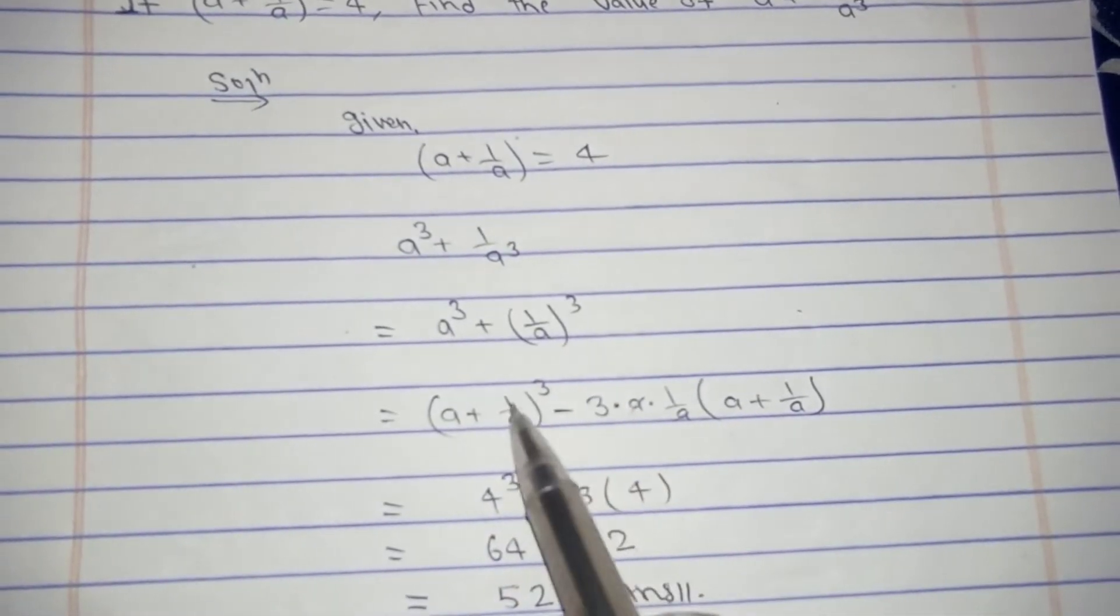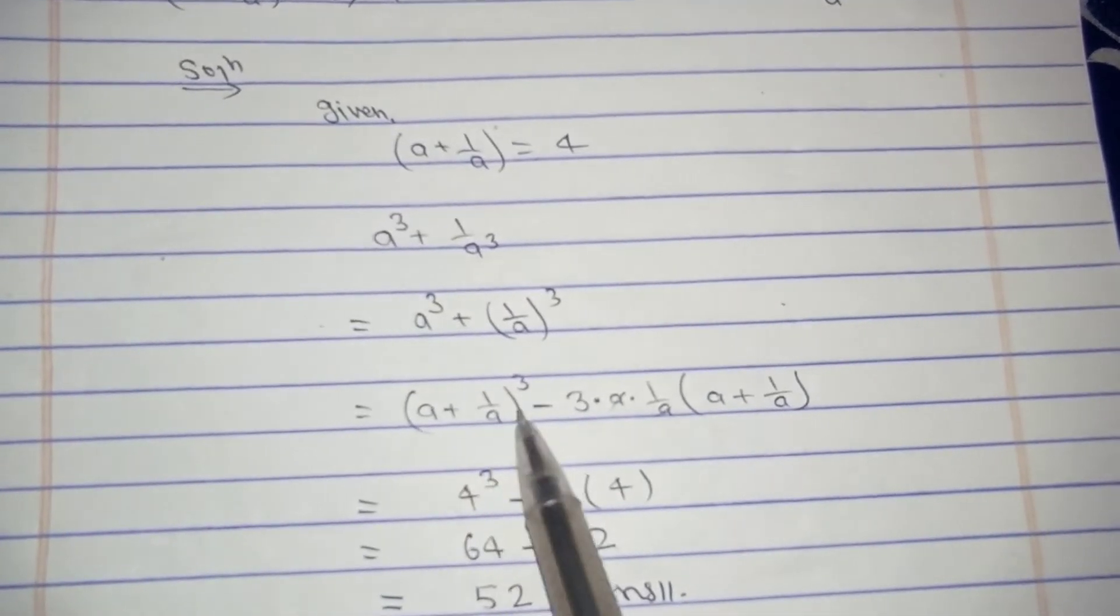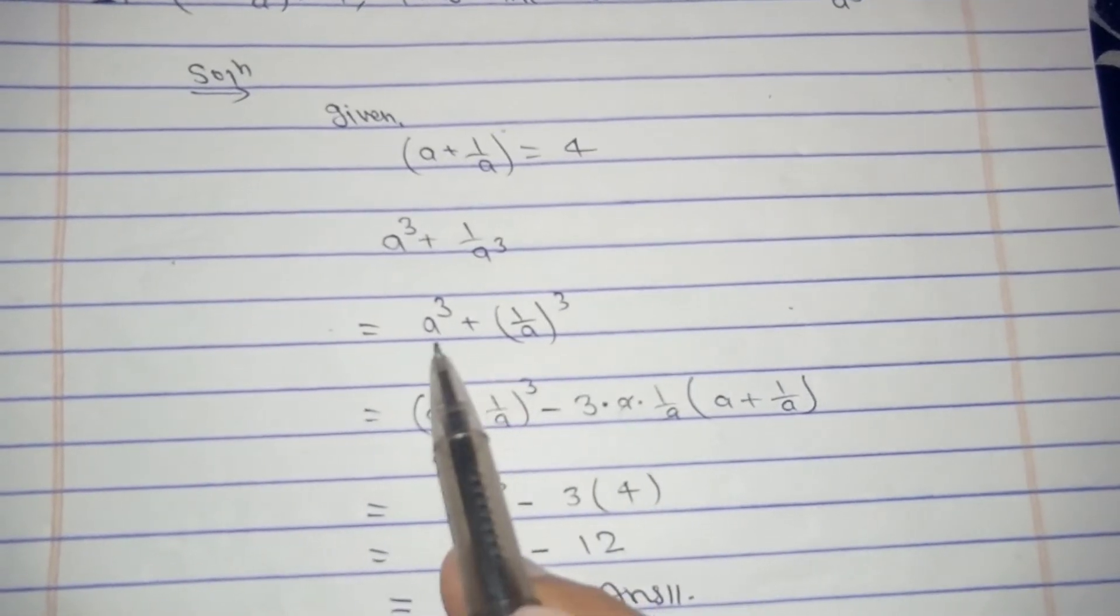So that we could use formula a cube plus b cube. And while using the formula a plus b cube, use this formula: a plus b whole cube minus 3ab times a plus b.